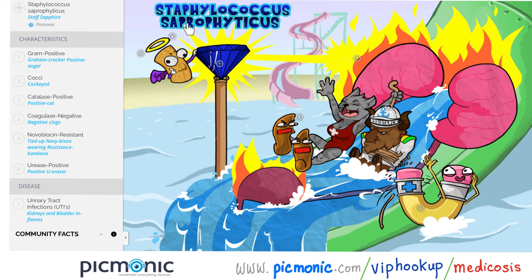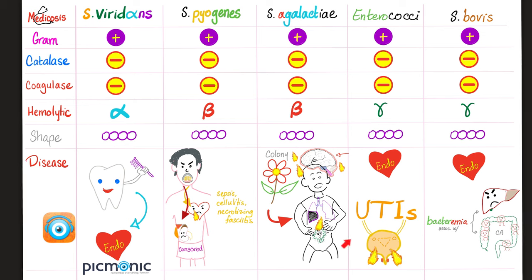Let's review Staphylococcus saprophyticus. Staph — here is a staph. Saprophyticus — here is sapphire. Gram positive. Coccus. Catalase positive. Coagulase negative. Novobiocin resistant. Urease positive. Diseases: urinary tract infections — urethritis, cystitis, or pyelonephritis. Pycmonic has more than 1,400 slides like this, with a video and a quiz for each one. Here is a wonderful comparison table. Please pause and review.